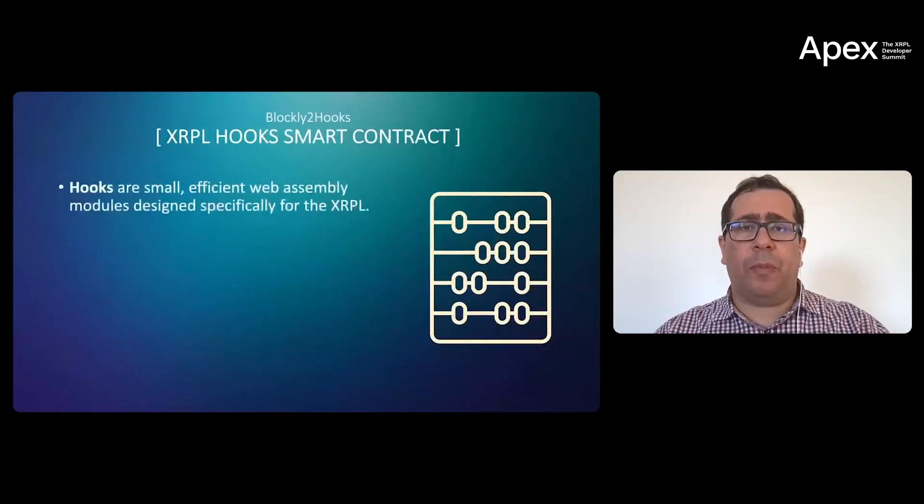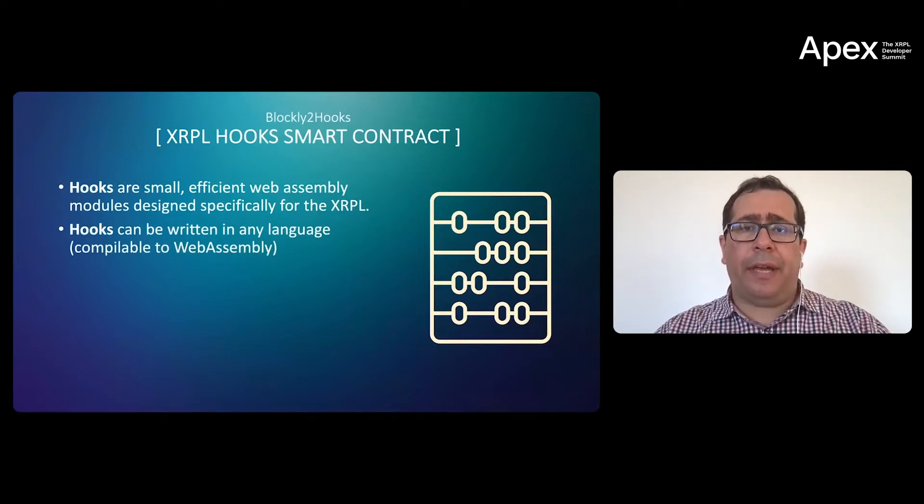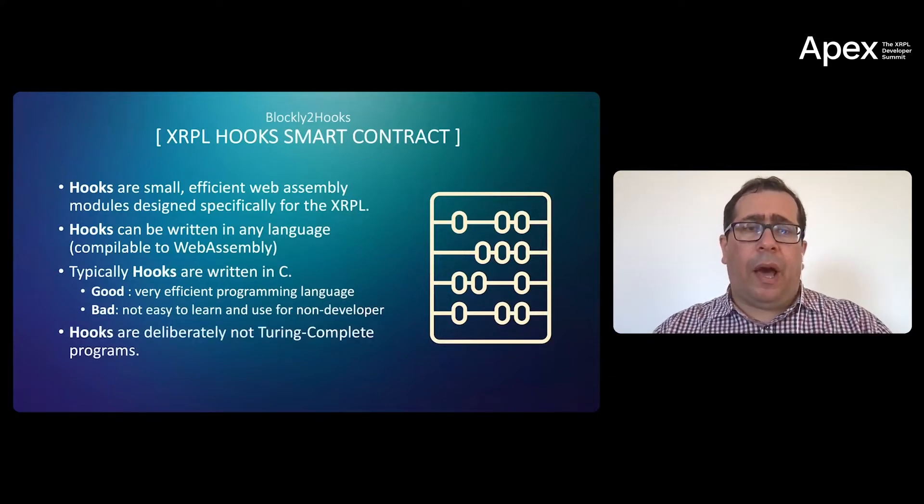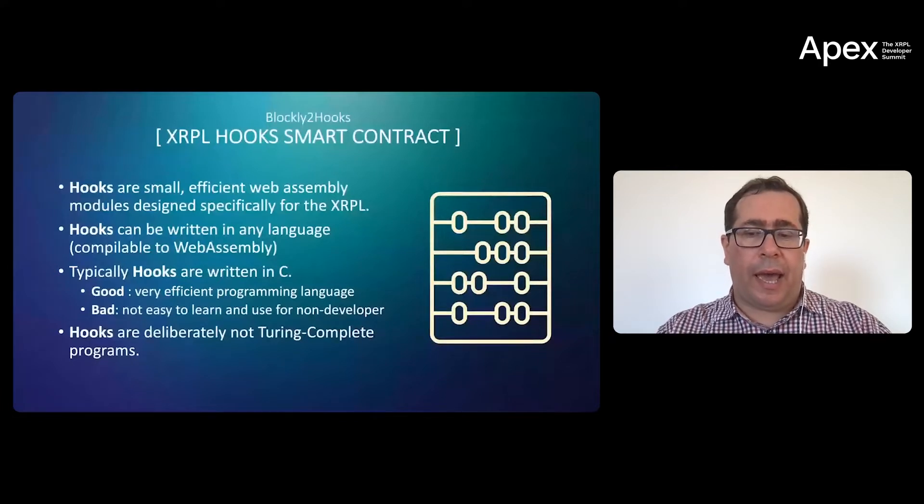XRPL Hooks smart contracts are small, efficient web assembly modules designed specifically for XRPL. Hooks can be written in any language and then compiled to web assembly. However, typically the recommendation is that Hooks need to be written in C language. For people who know C, it's very efficient, but the bad side is it's not easy to learn for non-developers. Also, Hooks are not full Turing complete programming, which means they require a special version of C that integrates the limitations inside Hooks development.